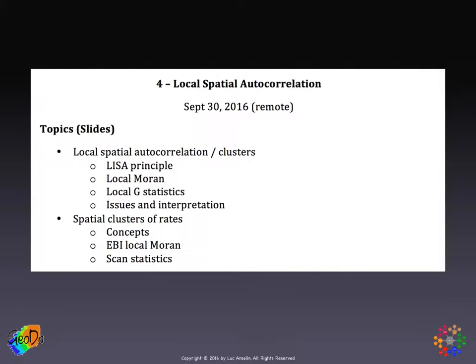The slides will be organized in two sets. The first set deals with local spatial autocorrelation from a statistical point of view as an extension of autocorrelation. And the second set deals with the special case where the variable of interest is actually a proportion or a rate.